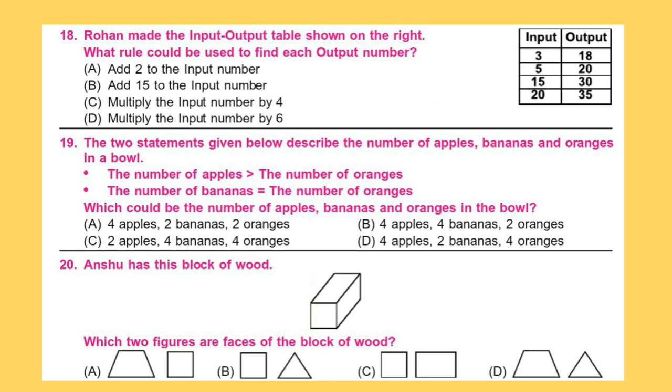Question 18. Rohan made the input-output table shown on the right. What rule could be used to find each output number?